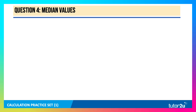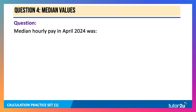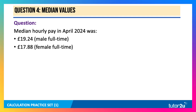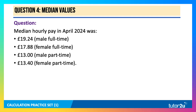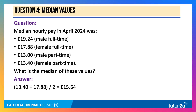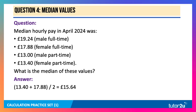Question 4: median values. Median hourly pay in April 2024 was £19.24 for male full-time, £17.88 for female full-time, £13.00 for male part-time, and £13.40 for female part-time. What is the median of those four values? With four values, we take the average of the second and third: 13.40 plus 17.88 divided by 2, giving a median of £15.64.